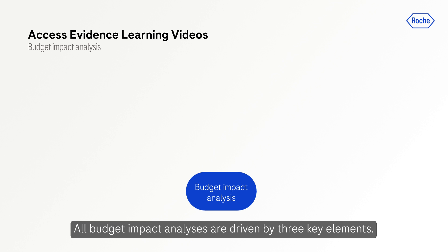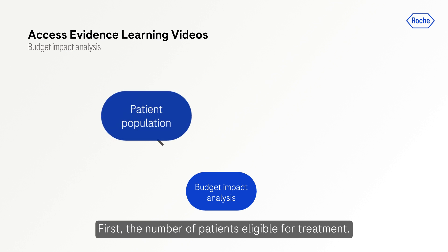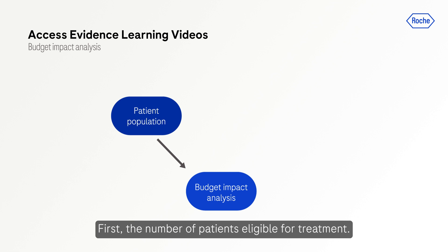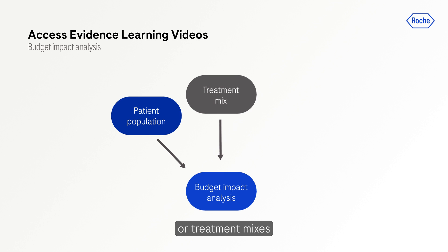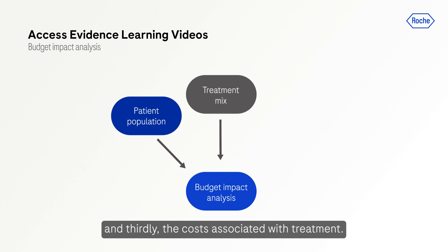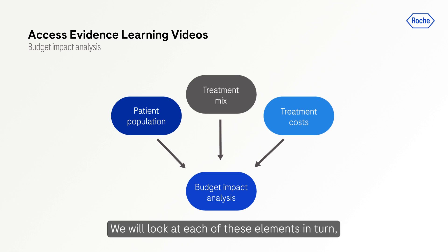All budget impact analyses are driven by three key elements. First, the number of patients eligible for treatment. Second, current and future management patterns or treatment mixes. And thirdly, the costs associated with treatment. We'll look at each of these elements in turn and consider the inputs required to calculate them.